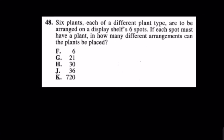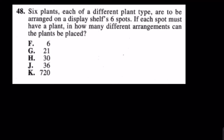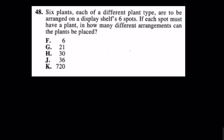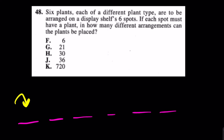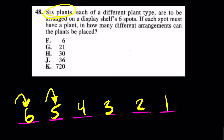Let's try another one — number 48. It says: if each spot must have a plant, in how many different arrangements can the plants be placed? Using the slot method, you have six slots on your windowsill. How many plants can you choose from in the first slot? Six. But now that the rose is chosen and placed down, how many plants do you have to choose from in the second slot? Five. Then four, then three, then two, then one. Once a plant is down, you don't have that plant to choose from anymore. So: six times five times four times three times two times one, and the answer is K.